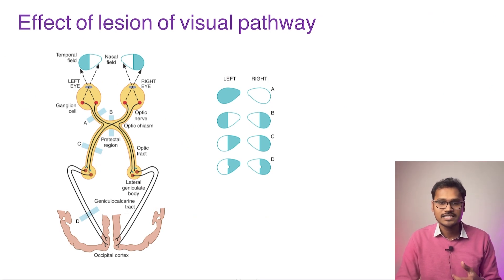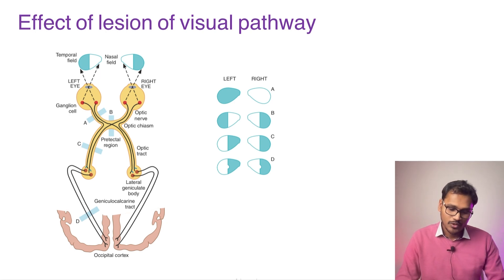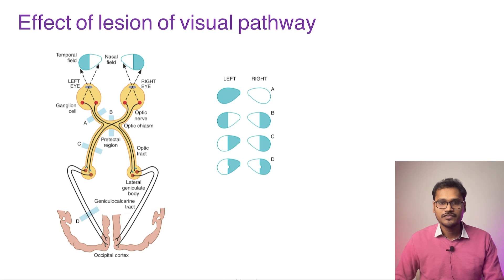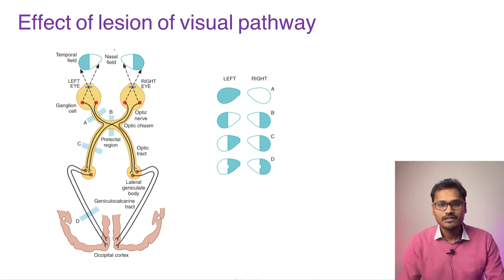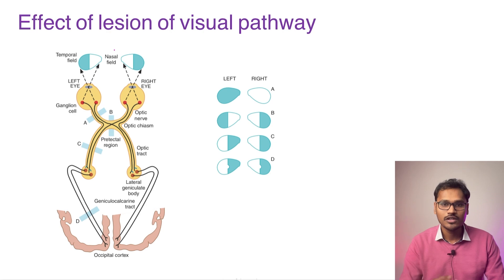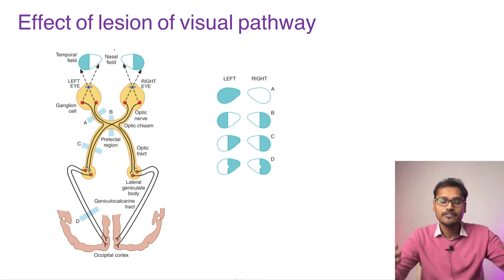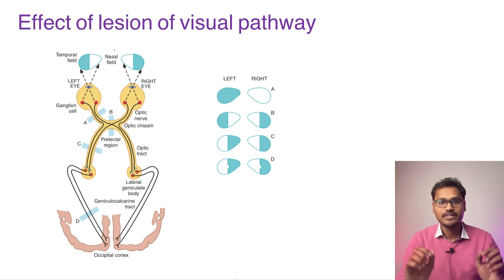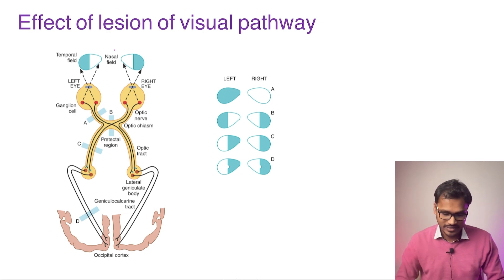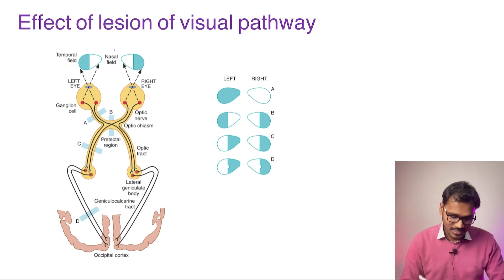Before discussing lesions, an important point: when a patient comes with an optical defect saying they cannot see in a certain direction, we record the defect in terms of the visual field, not the retina. The original complaint is always represented in the visual field of the patient. All defects are named against the visual field, not the retina — this is very important.